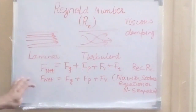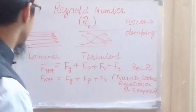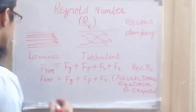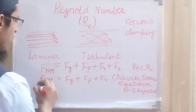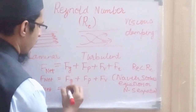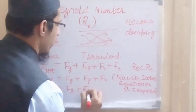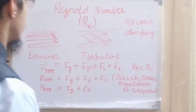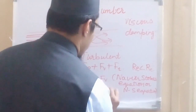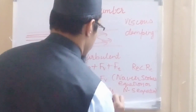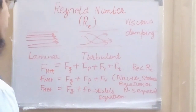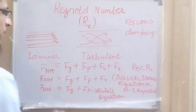The Navier-Stokes equation can be extended to all directions, giving three sets of equations in x, y, and z directions that can be solved together. If we consider an ideal fluid, viscosity is zero, so the equation simplifies further to: F_net equals gravitational force plus pressure force. This simplified equation is known as Euler's equation. In this way, determining the Reynolds number helps identify which equation to use for solving a particular problem.